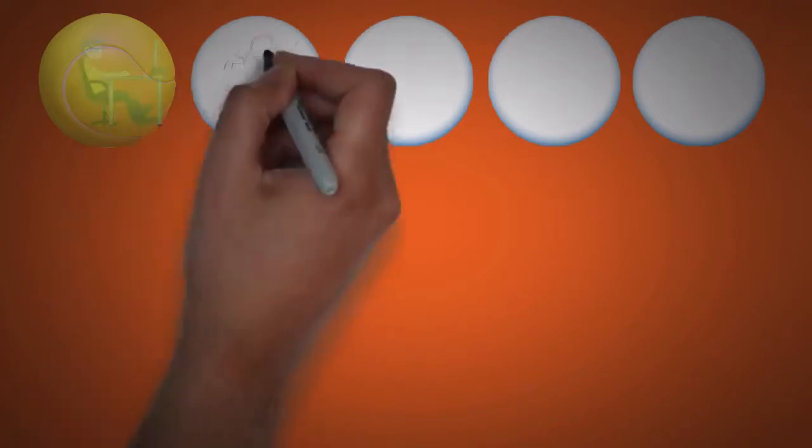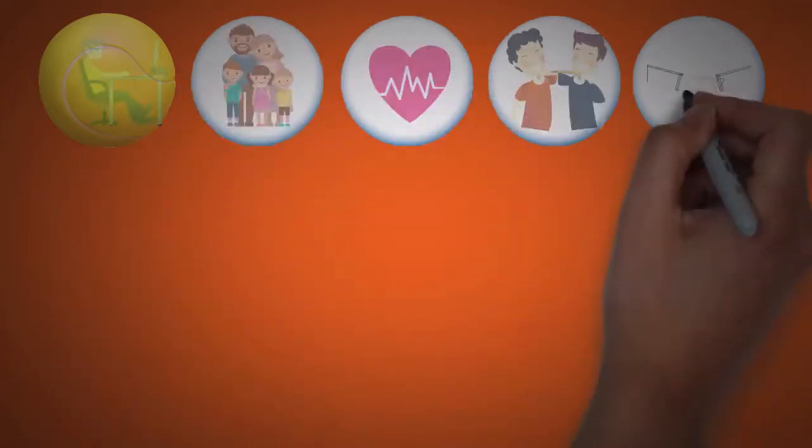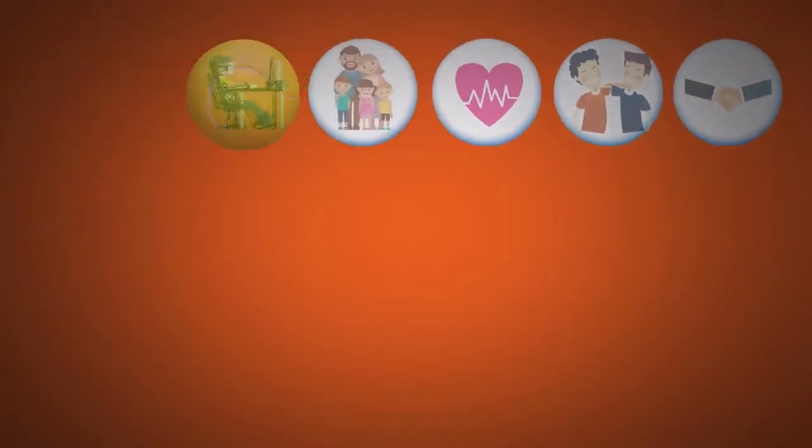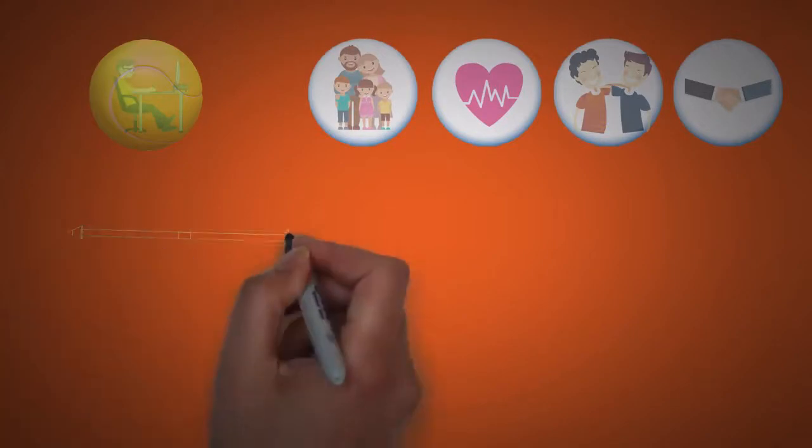Next Gary says to picture juggling 5 balls representing work, family, health, friends, and integrity, with work being made out of rubber that if you drop, it will bounce, and the rest being made out of glass that can shatter. He says to separate these for counterbalancing purposes.